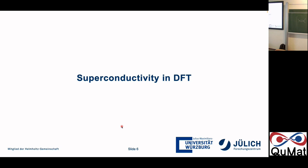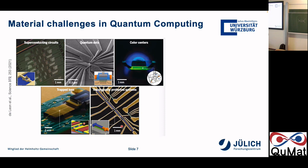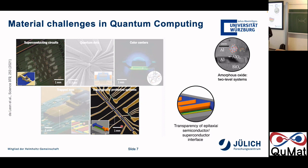We are interested in superconductivity because it is very important for some realizations of qubits and the materials needed for quantum computation. In particular, I want to highlight two approaches to realizing a quantum computer. First, superconducting qubits — superconductors are already in the name. You build circuits composed of superconducting elements, so-called Josephson junctions.